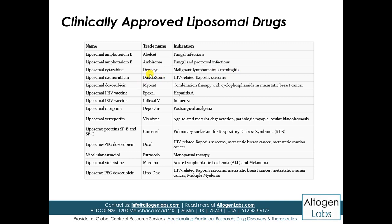Liposomal cytarabine is available in the market by the trade name DepoCyte. Another liposomal agent available in the market is used against HIV-related Kaposi's sarcoma — that is liposomal daunorubicin. Daunorubicins are also available in a liposomal formulation. Another one is liposomal doxorubicin, available in the market by trade name Myocet, and can be given in combination therapy with cyclophosphamide in metastatic breast cancer.